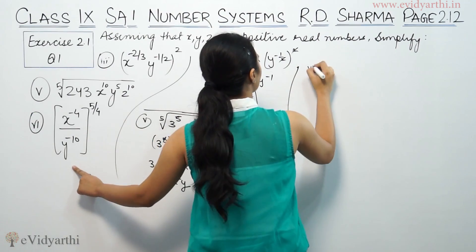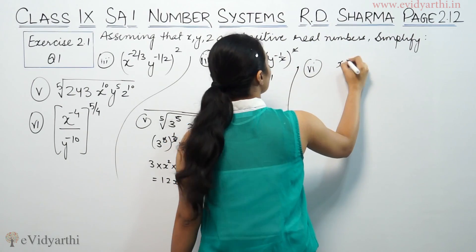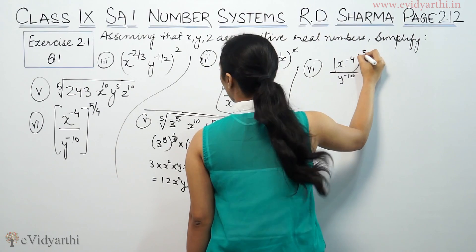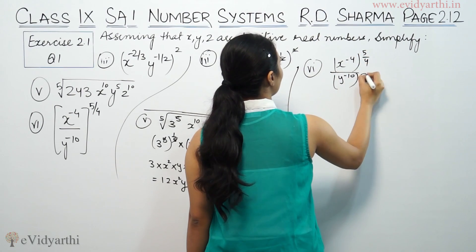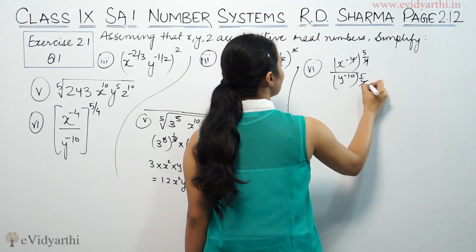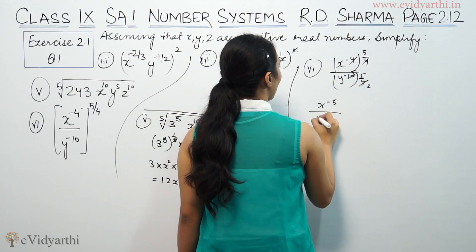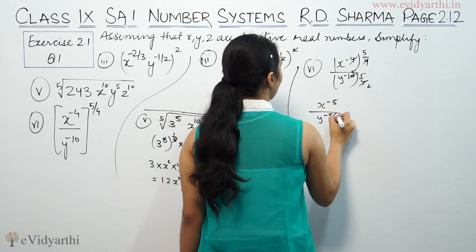Part (vi): This says X to the power minus 4, Y to the power minus 10, 5/4 is for both. 4 and 4 cancel, so we get X to the power minus 5 upon Y to the power minus 5/2.